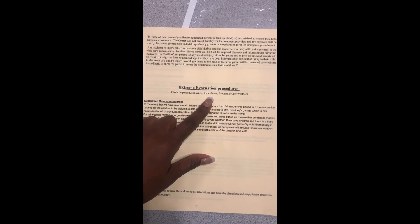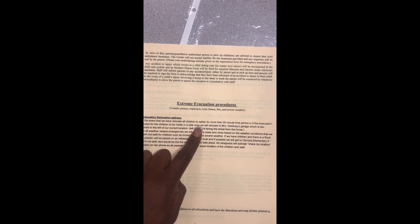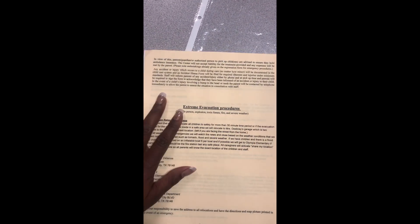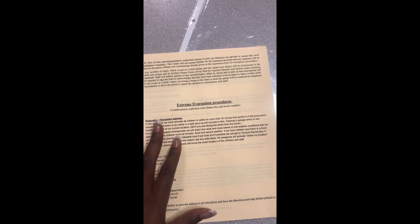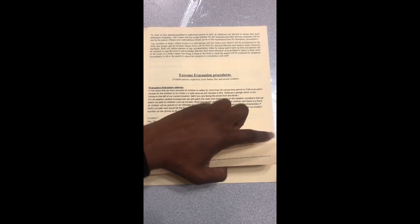So my extreme evacuation procedure, it's for volatile person, explosions, toxic fumes, fires, and severe weather. And so it lets you know our evacuation relocation address. It says in the event we have to relocate all of the children to safety for more than 30 minute time period or if evacuation causes for the children to be inside in a safe area, it just tells me where we're going to be relocated. If there's a flood, what we would do will inflate our boats and stuff like that. The addresses are here. I'm hiding it so that nobody from YouTube will come pop up on me and do something crazy.